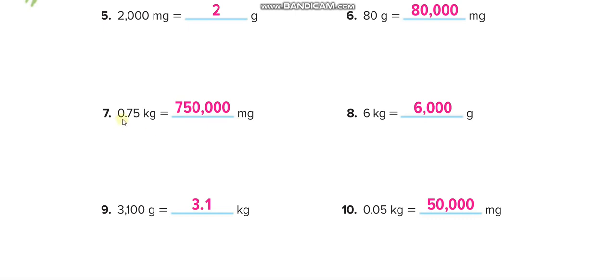Now convert 0.75 kilograms to milligrams. First convert to grams by multiplying by 1000. When multiplying a decimal by 1000, count the three zeros and move the decimal three places to the right: 0.75 becomes 750 grams. Then multiply by 1000 again to convert to milligrams, giving 750,000 milligrams.